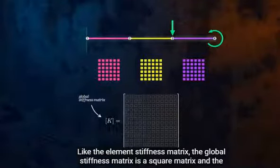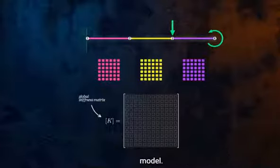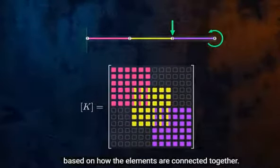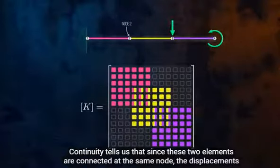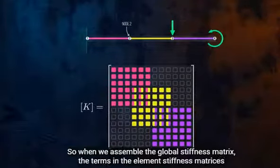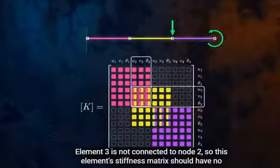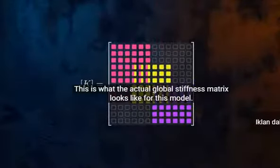Like the element stiffness matrix, the global stiffness matrix is a square matrix, and the number of rows and columns is equal to the total number of degrees of freedom in the model. The element stiffness matrices are assembled together to form the global stiffness matrix based on how the elements are connected together. Elements 1 and 2 are connected at node 2, for example. Continuity tells us that since these two elements are connected at the same node, the displacements for both elements must be the same at the common node. So when we assemble the global stiffness matrix, the terms corresponding to node 2 should be summed for each degree of freedom. Element 3 is not connected to node 2, so this element's stiffness matrix should have no effect on the displacements at node 2.